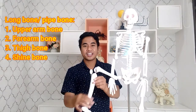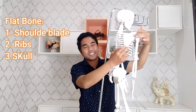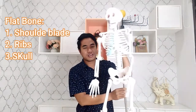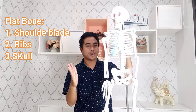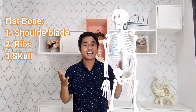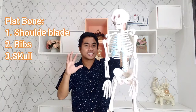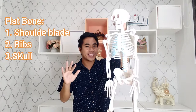The examples of flat bones are shoulder blade — shoulder blade is flat — and then ribs, which is also a flat bone. And then the skull. Why is the skull flat? Because the skull consists of many bones, and each bone is flat.